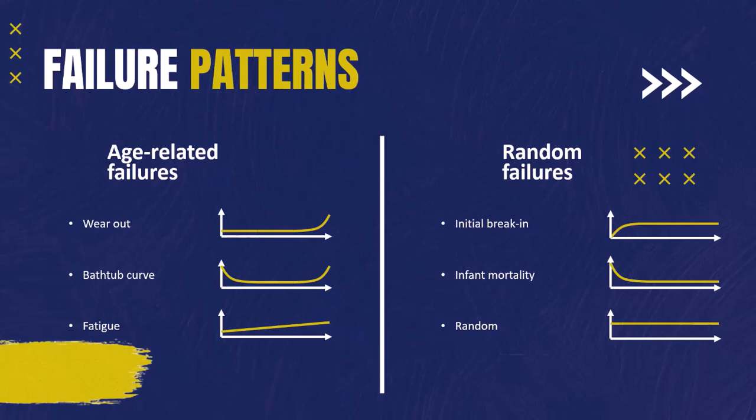In the random pattern the hazard is constant, meaning failure is totally random and independent of time. In the initial break-in pattern there is a rapid increase in hazard at the very beginning of the asset's life, then it remains constant. Finally, infant mortality is even more interesting because the hazard is even higher at the beginning and then remains constant. This can happen with industrial heavy machinery that tends to have high hazard of early failures due to initial defects or improper setup.